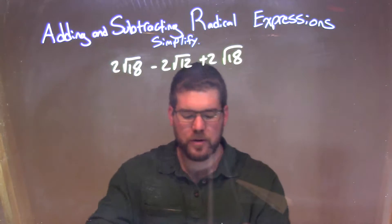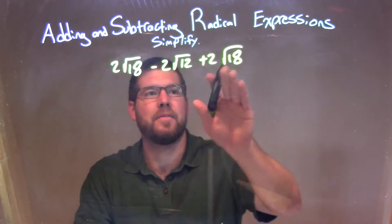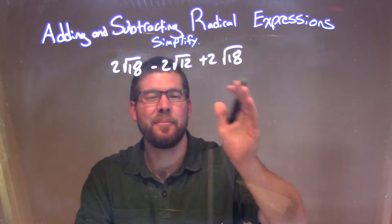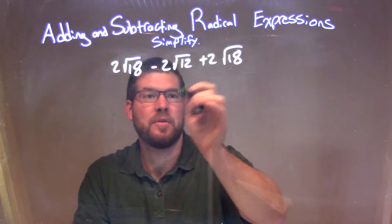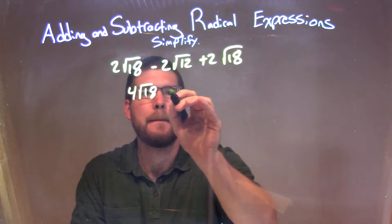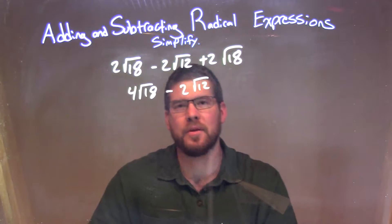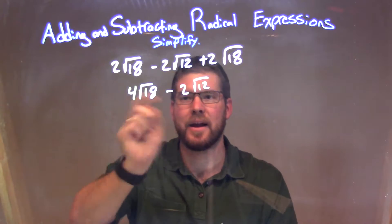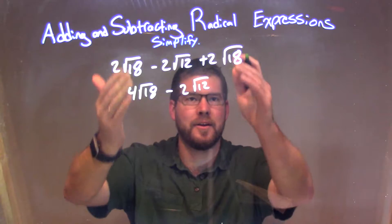I'm going to do this a little different. I see I have a square root of 18 — I have two of them with the same square root of 18. So what I'm going to do is combine them right away. I have 2 and 2, and I can combine those before I look at simplifying, giving me 4 square root of 18 minus 2 square root of 12. I can combine them instead of trying to break down each square root individually.